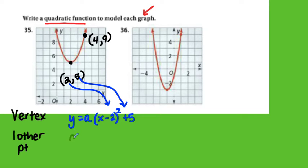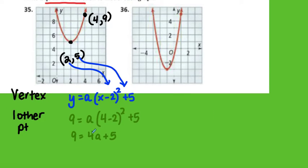So I'm going to plug in 9 for y, then 4 minus 2 squared plus 5. So 9 equals 4 minus 2 squared is 2, 2 squared is 4, so 4a plus 5. If I subtract 5, I get 4 equals 4a, and then I divide by 4, so a equals 1.